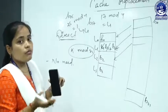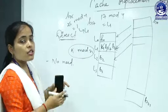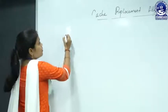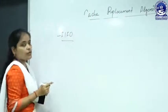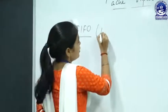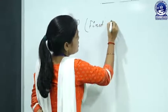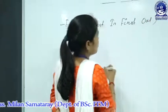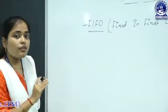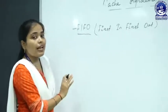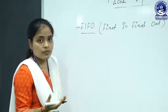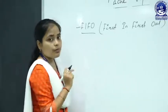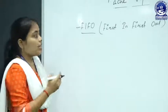Let's see some replacement algorithms used to replace blocks of cache memory in associative and set associative mapping techniques. The first one is the FIFO replacement algorithm. FIFO stands for First In First Out — whatever block is placed in the line first will be replaced first.